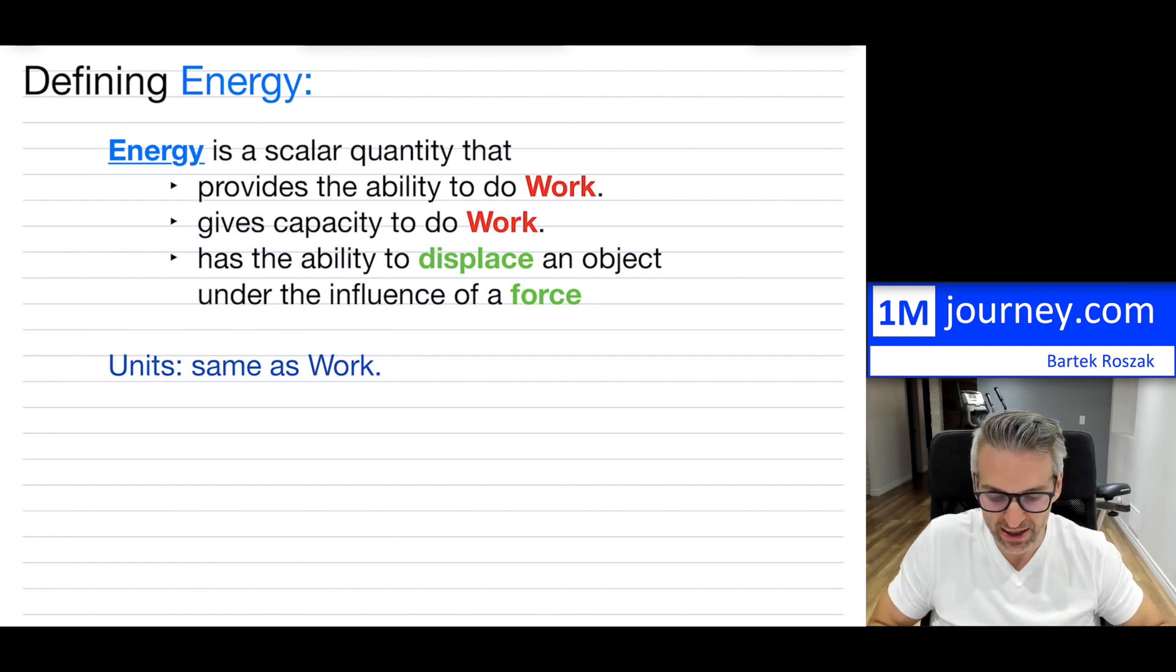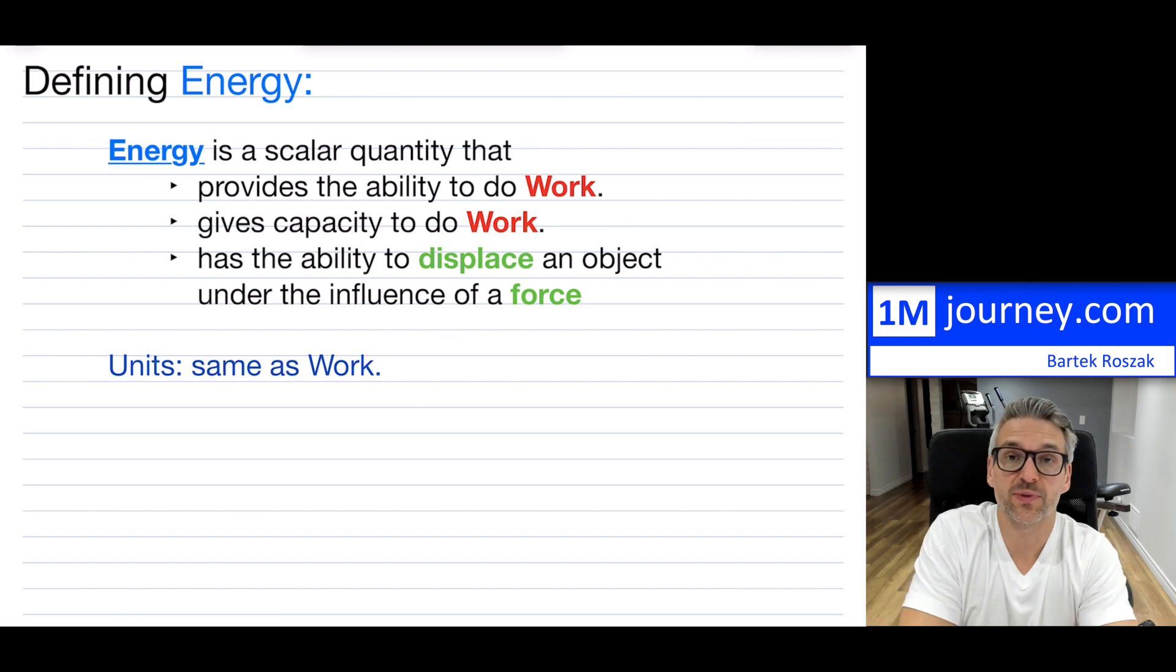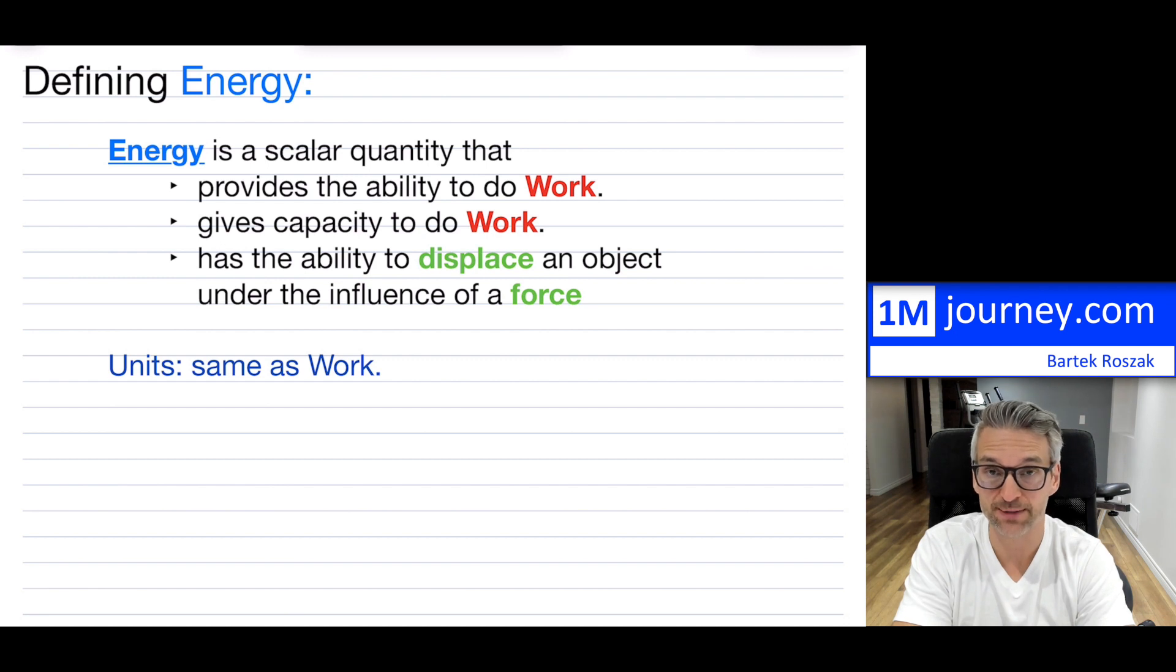So energy is a scalar quantity, right? It doesn't have a direction like force, for example, like velocity, displacement, and several others. Work is also scalar. Both of them are scalar quantities, so they just have a magnitude with a unit. Now, energy does have the exact same units as work.